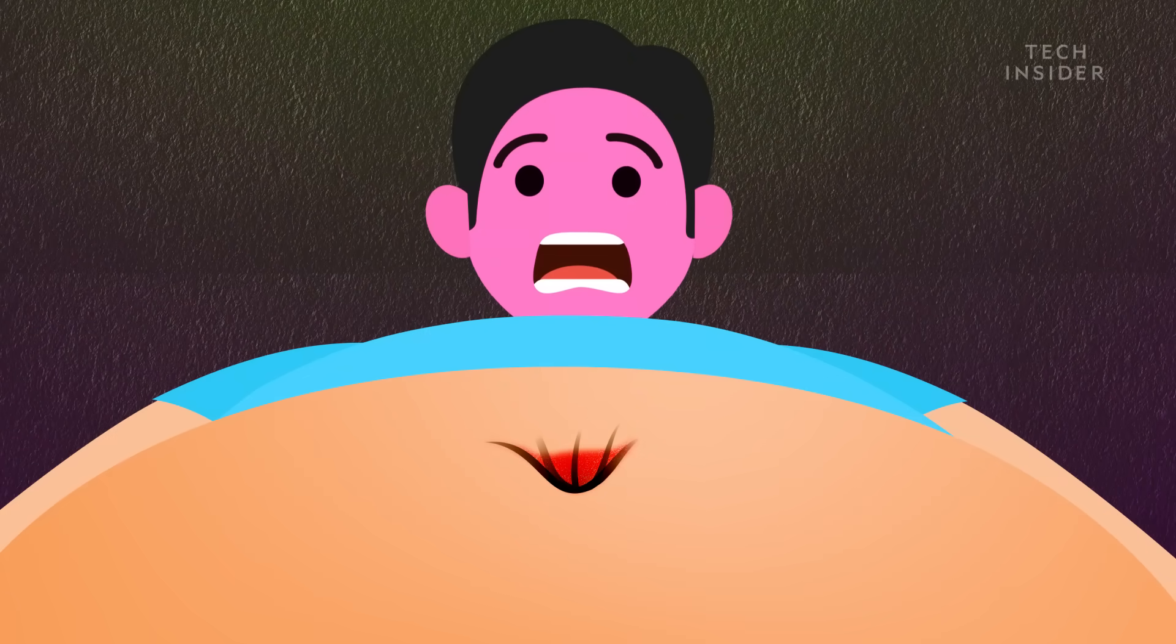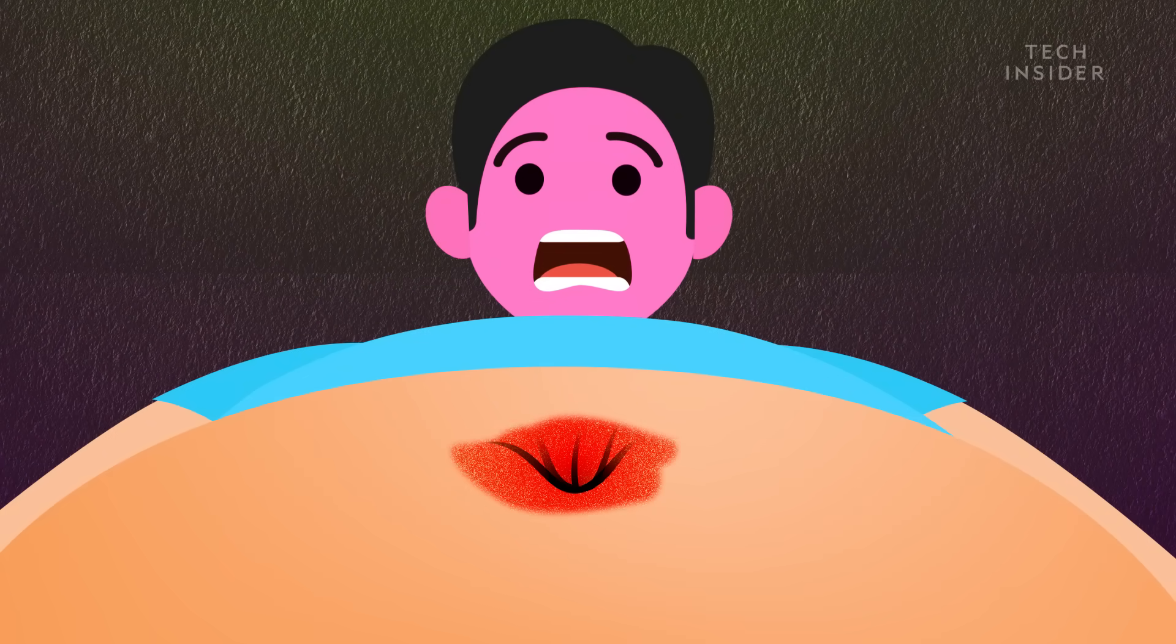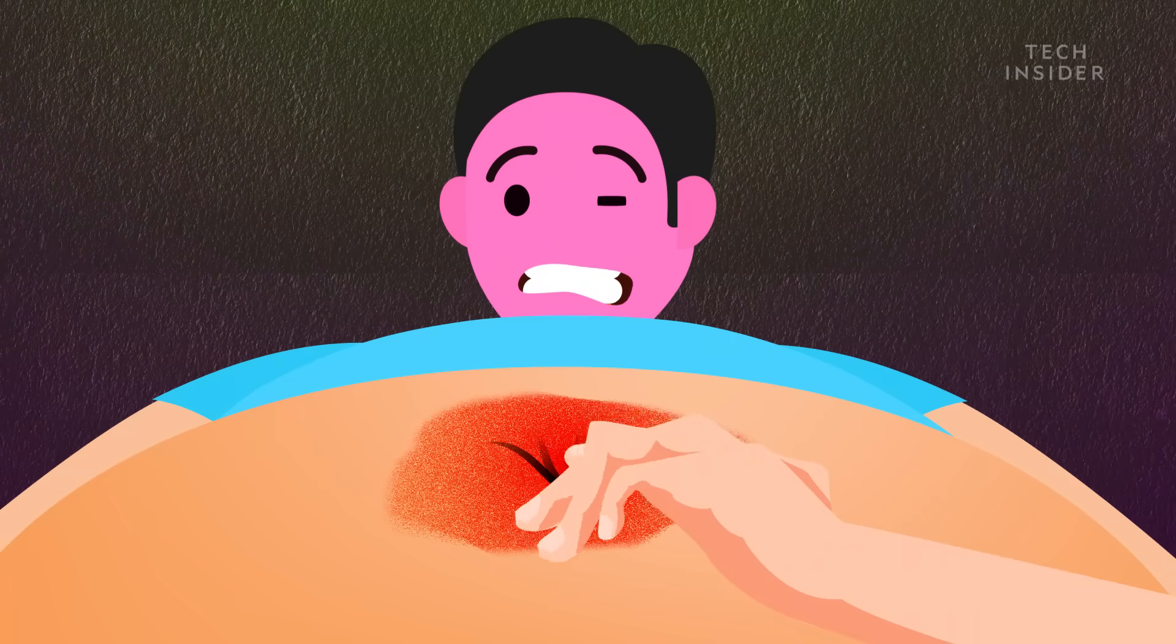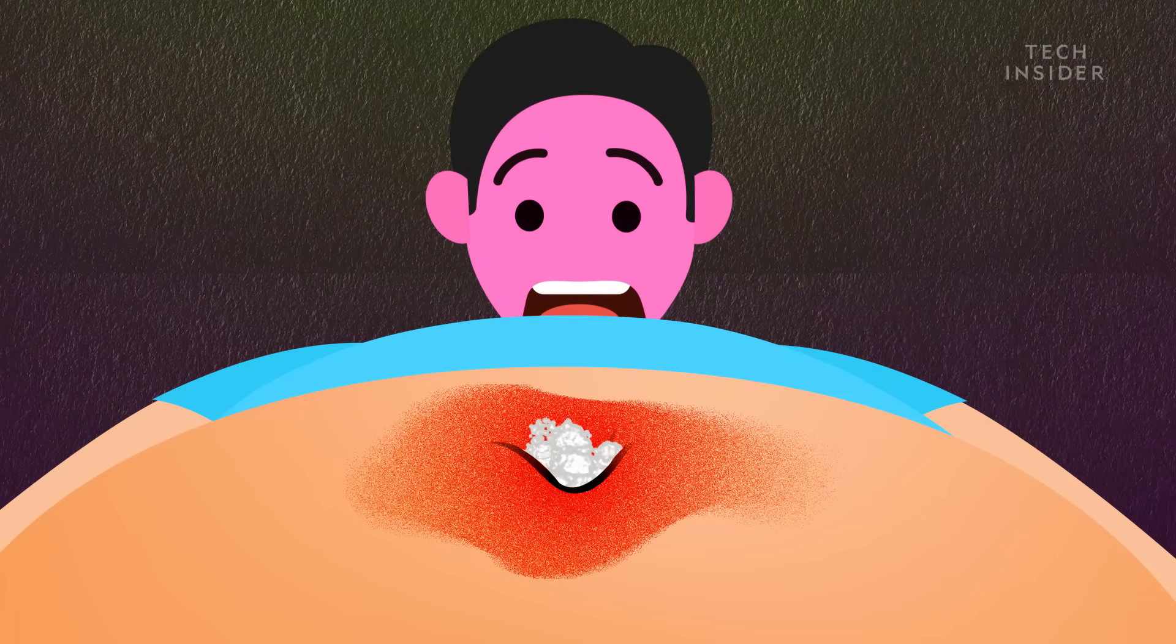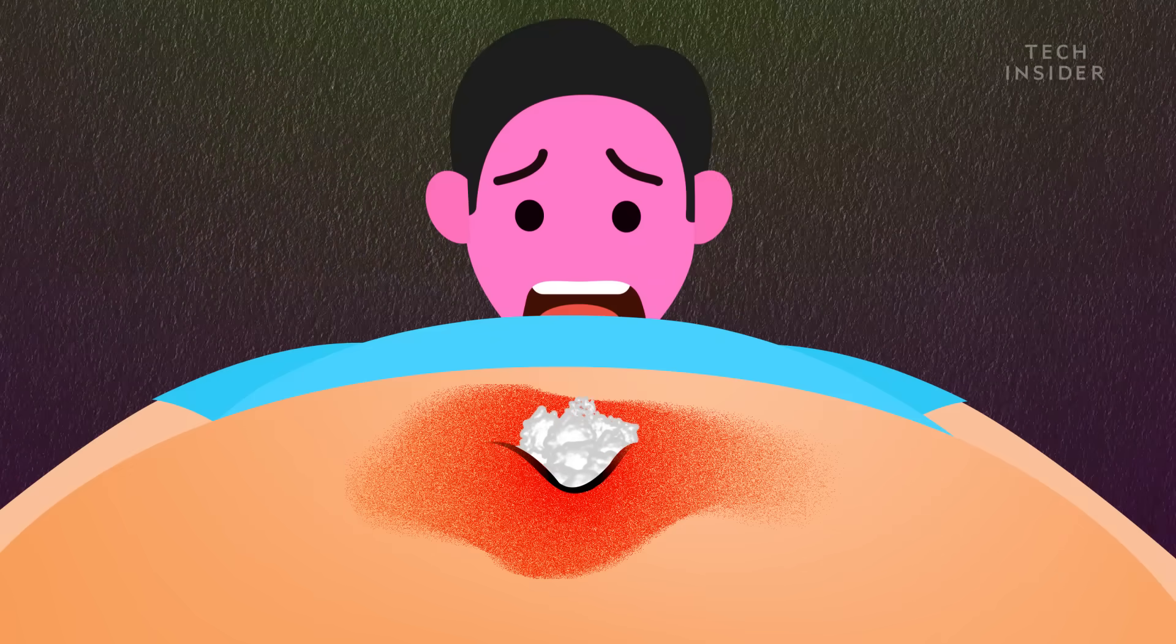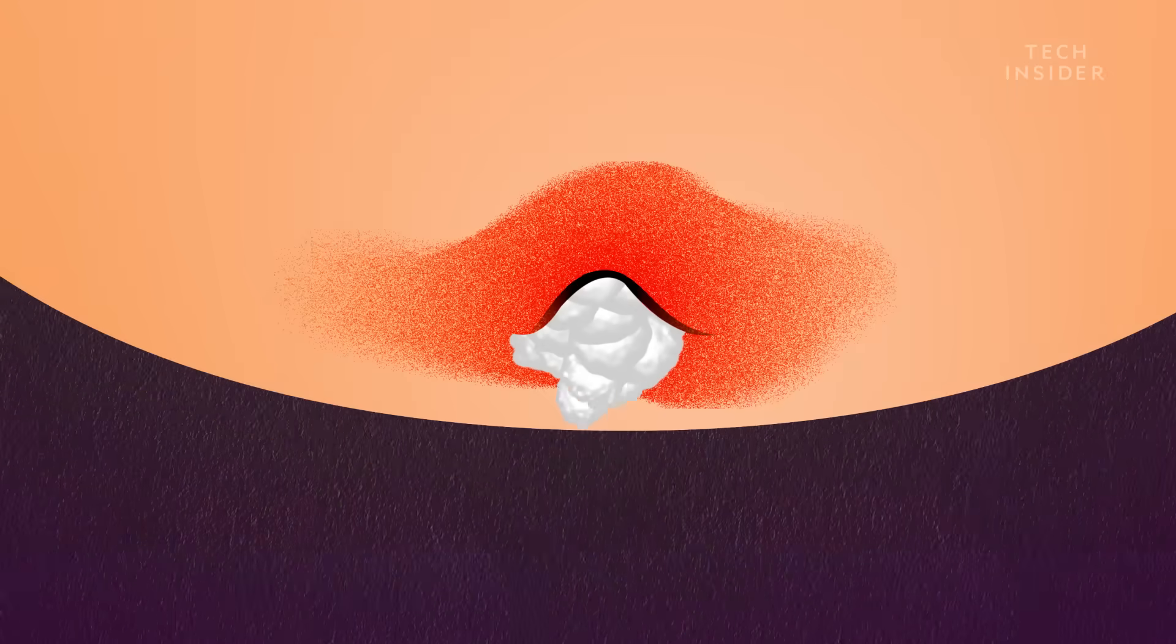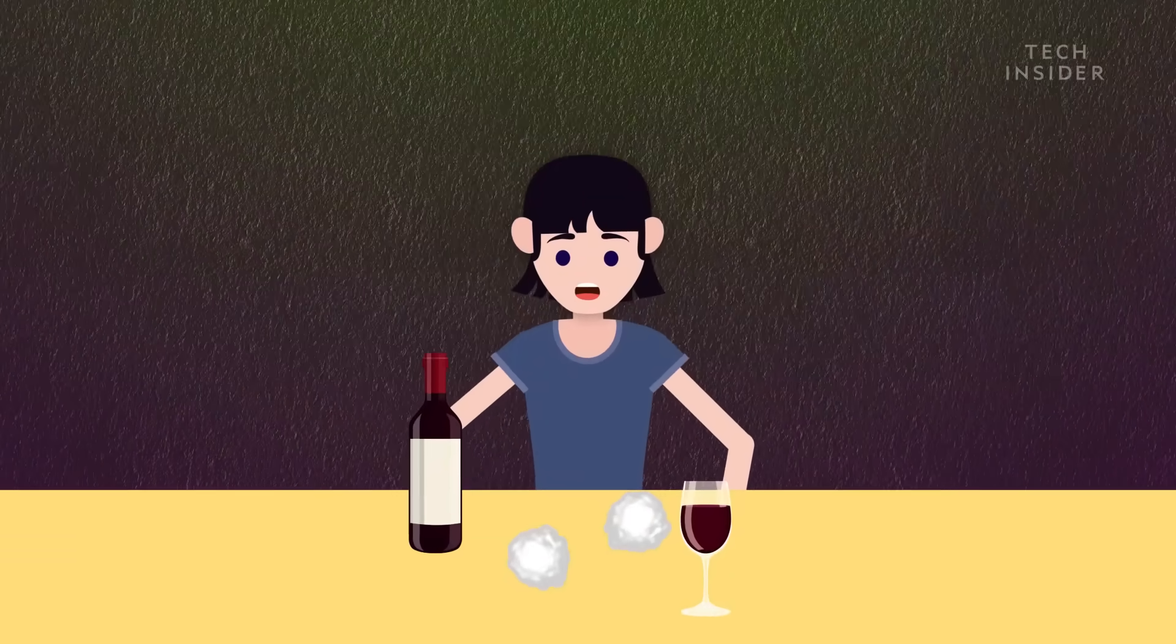That's right, you can get a yeast infection in your belly button, which can lead to itching and redness, and cause a clear or off-white discharge to leak out, which almost looks like cottage cheese. So how does that cheese sound now?